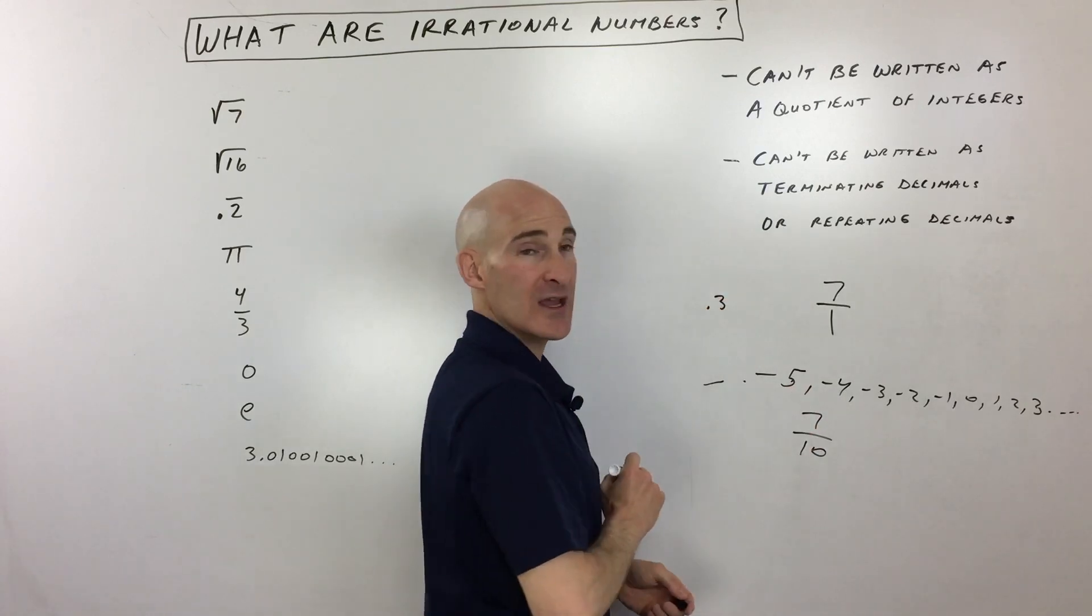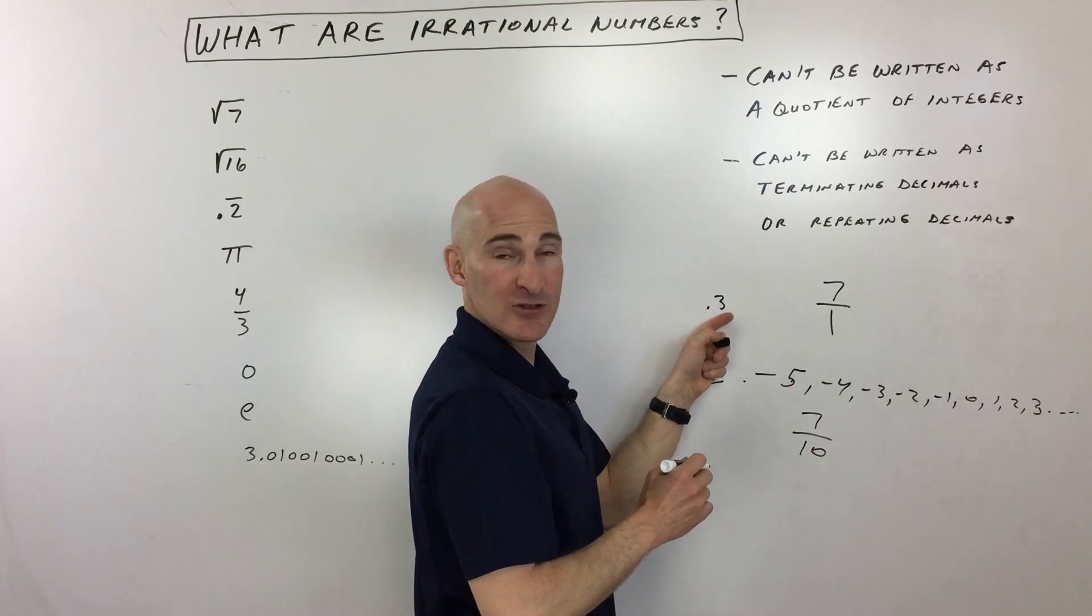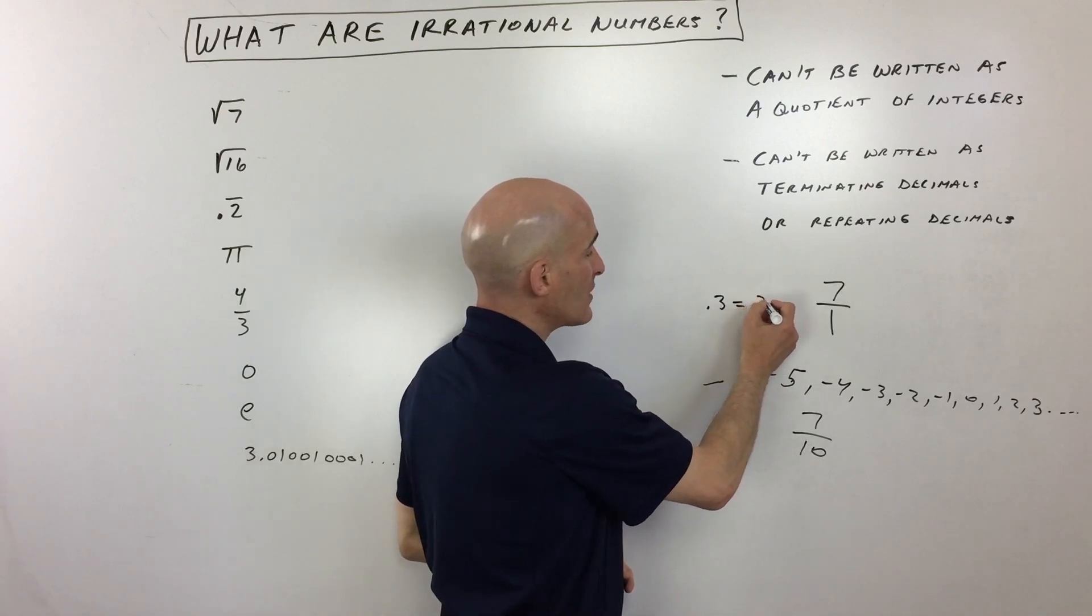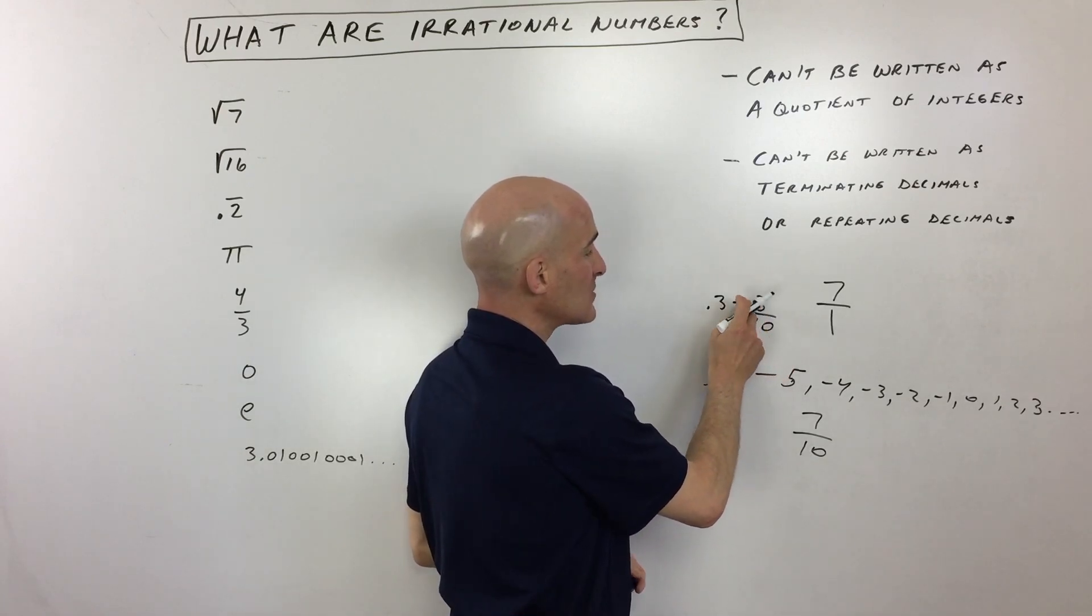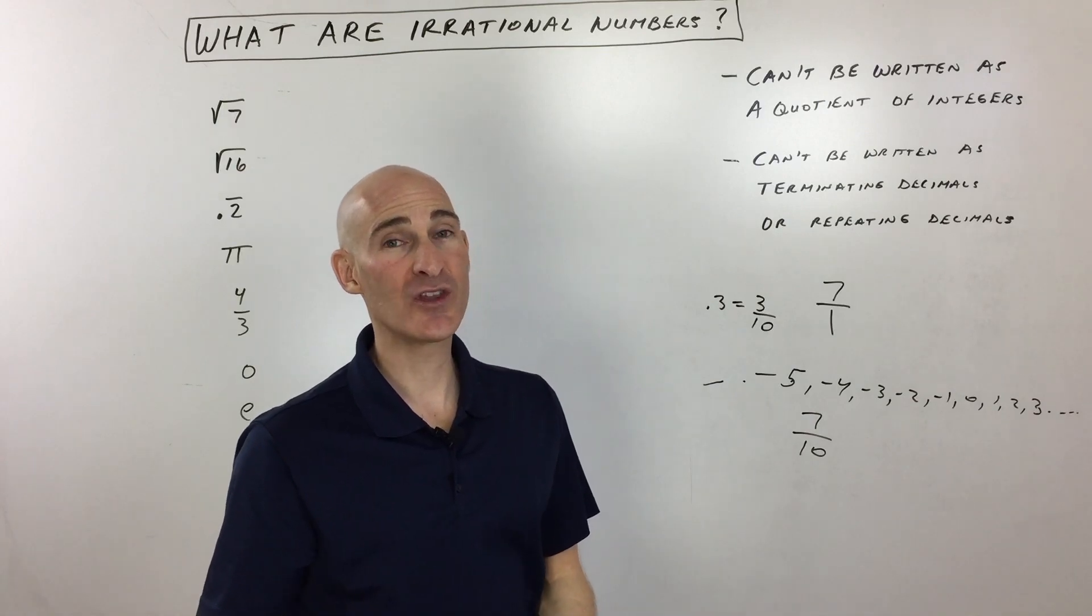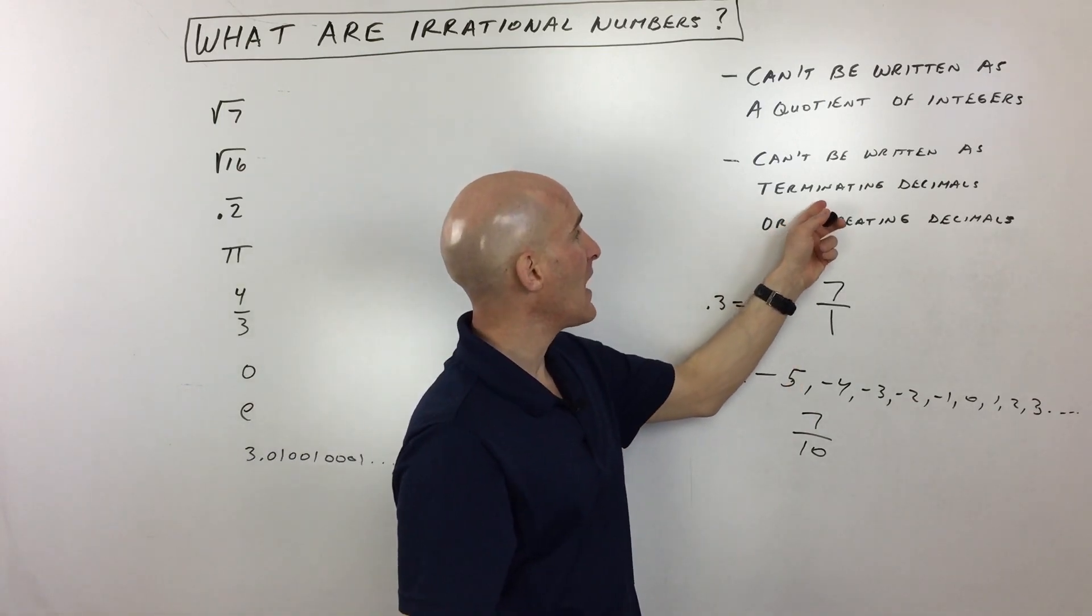say for example if you have 0.3. Well, 0.3, you see how it stops or terminates? 0.3 can be written as 3 divided by 10, and you can see we're back to an integer divided by an integer. That's a rational number, not an irrational number.